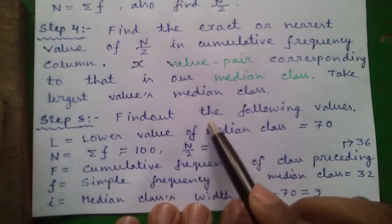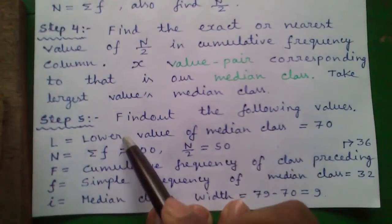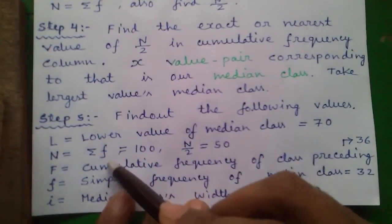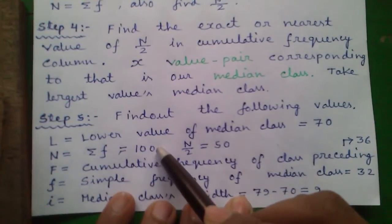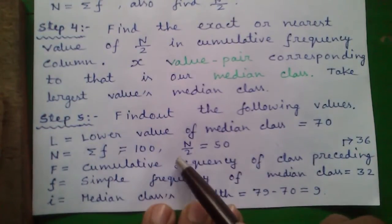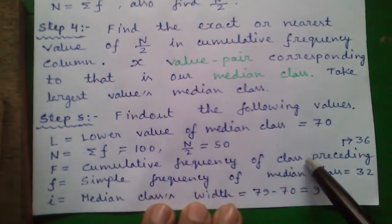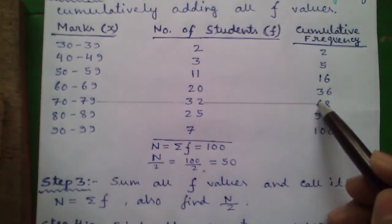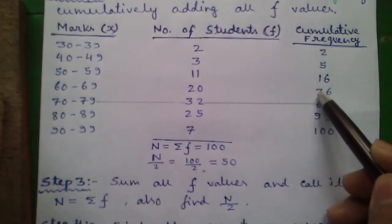Step 5: Find out the following values. L equals to the lower value of the median class which is 70. n is sum of all f values is 100 and n by 2 is 50. Capital F is cumulative frequency of the class preceding. Our median class is this and cumulative frequency of the preceding class is 36.